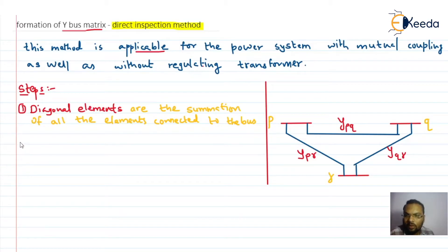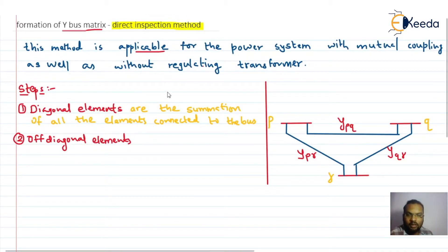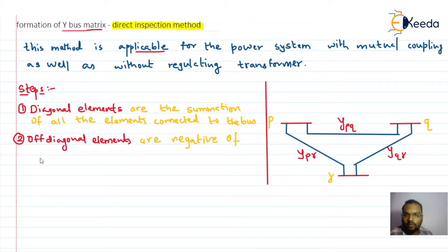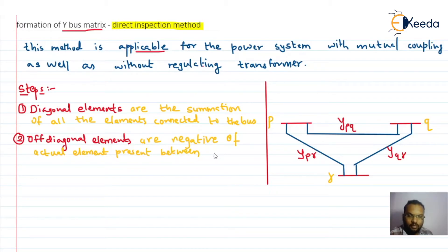Step two concerns the off-diagonal elements: the off-diagonal elements are the negative of the actual admittance element present between the two buses.